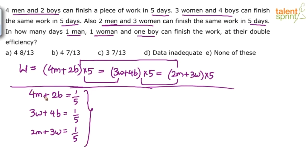So: 4 men + 2 boys = 1/5, 3 women + 4 boys = 1/5, and 2 men + 3 women = 1/5. These are 3 equations and 3 unknowns: M, B, and W — which represent individual capacities. Once you get those individual capacities, you can find the number of days taken by 1 man, 1 woman and 1 boy.